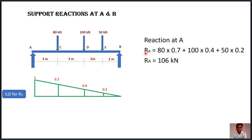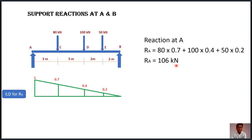To find reaction at A, we multiply each point load by its respective ordinate: 80 × 0.7, plus 100 × 0.4, plus 50 × 0.2. Taking the sum gives reaction at A equal to 106 kN. It is a very simple procedure — multiply the point load by the respective ordinate in the influence line diagram.